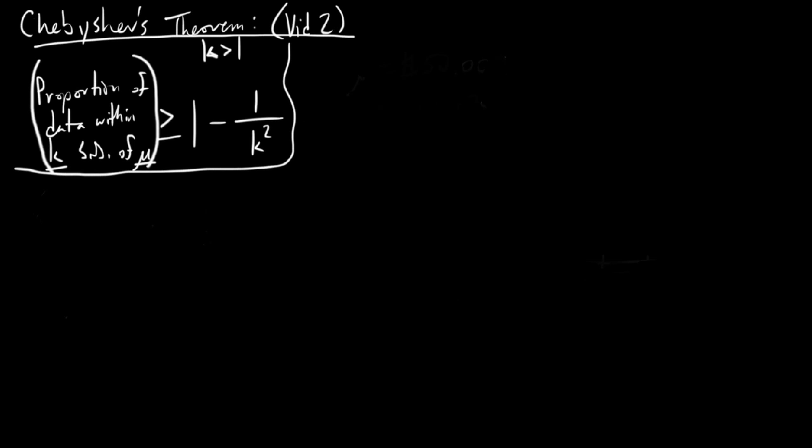The nice thing about Chebyshev's Theorem is that we spend a lot of time trying to find what proportion or percentage of the population lies within a certain interval of given data values in a distribution. But most of the time we end up discussing standard normal distributions.